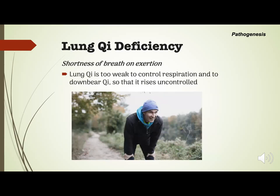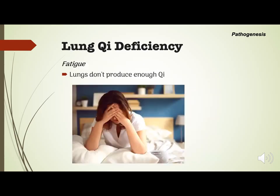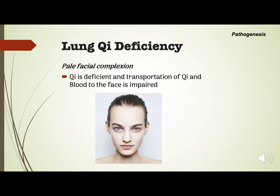People with lung chi deficiency also present with shortness of breath on exertion, as lung chi is too weak to control respiration and downbear chi so that it rises uncontrolled. They are also always fatigued as the lungs do not produce enough qi or energy. Additionally, chi is deficient and transportation of chi and blood to the face is impaired, so people with lung chi deficiency will have a pale facial complexion.